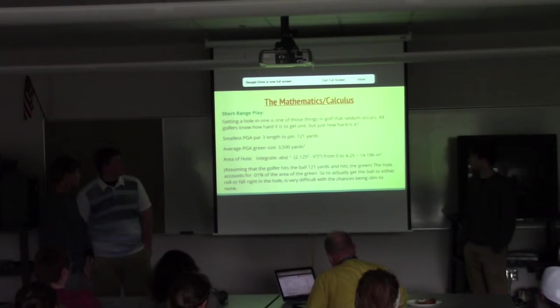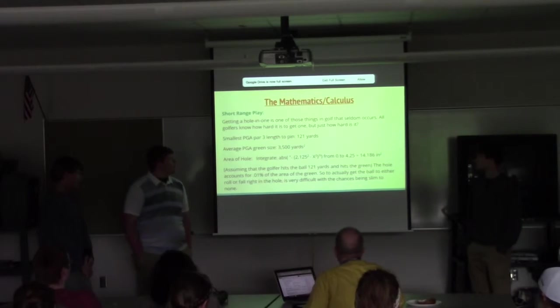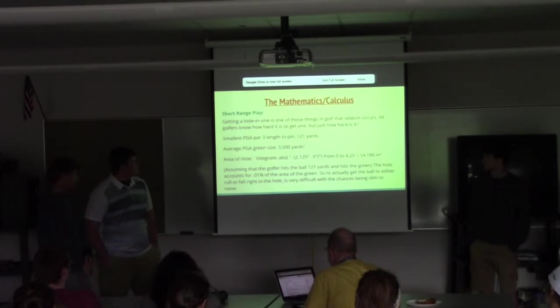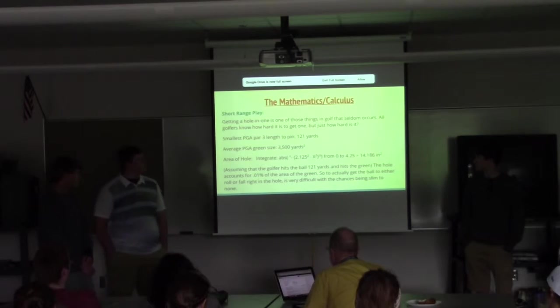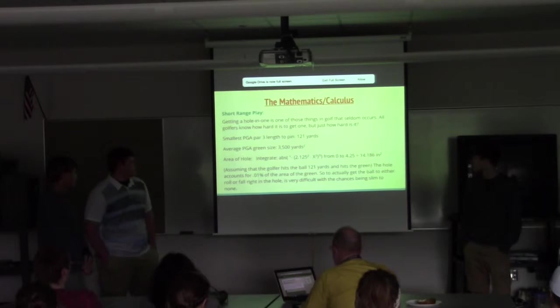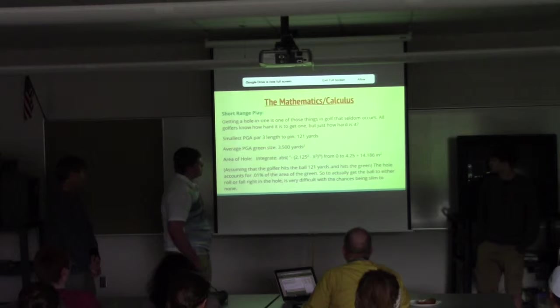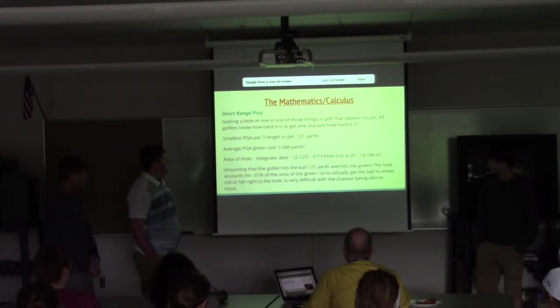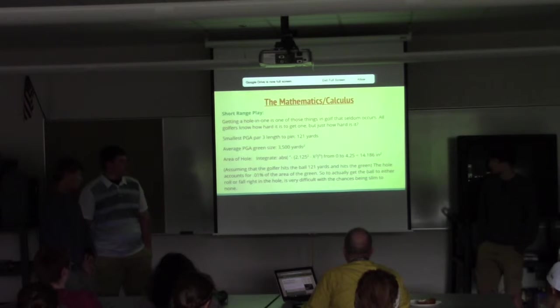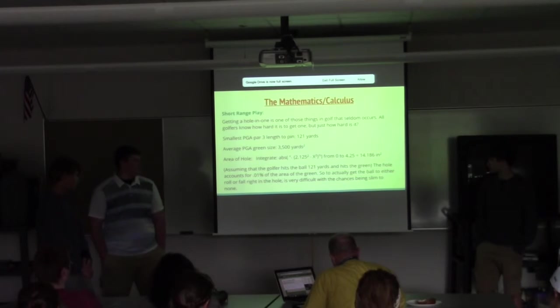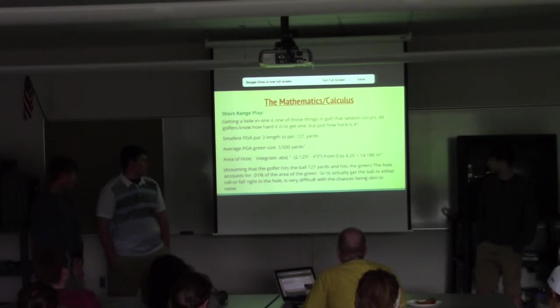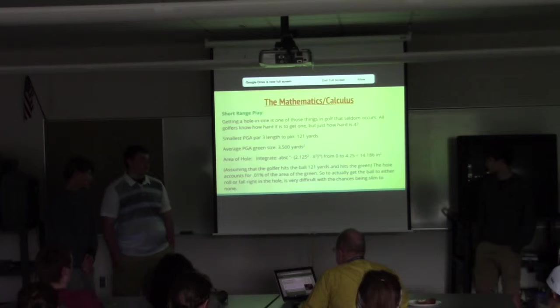Short range of play. Getting a hole-in-one is one of those things that rarely happens in golf, but just how hard is it to get a hole-in-one? The smallest PGA par three length to the pin is 121 yards, and the average PGA green size is 3,500 yards squared. If you take the hole and you find the area of it, you integrate the absolute value of positive or negative 2.125 squared minus x squared to the half power, you get 14.186 inches squared. Assuming that the golfer hits the ball 121 yards and hits the green, the hole accounts for 0.01% of the area of the green. To actually get the ball to either roll or fall right in the hole is very difficult, and your chances are slim to none. That really just shows how hard it is to actually get a hole-in-one.